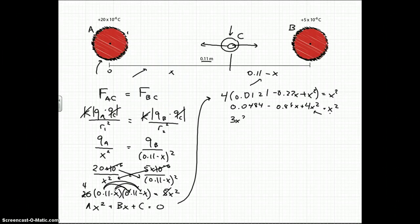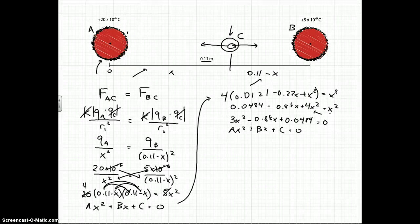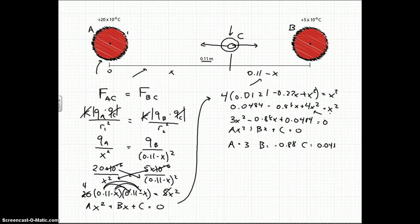And you have 3x squared minus 0.88x plus 0.0484 and that's all equal to 0. So now we have it in that form, Ax squared plus Bx plus C is equal to 0. So now what you do is you just do the quadratic formula. You can do that online or in your calculators if you have the program. But you just get each of the coefficients. So A is 3, B is negative 0.88, and C is positive 0.0484.